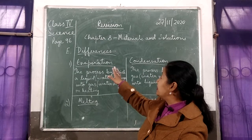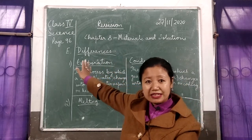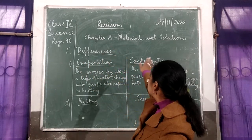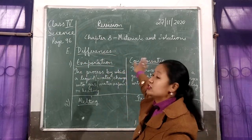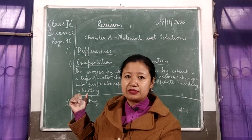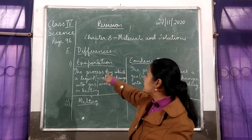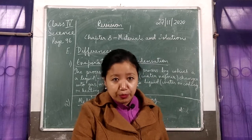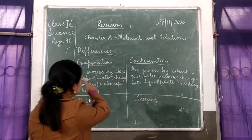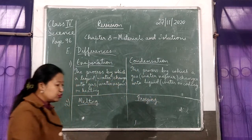So page number 96 — I will read page number 96, chapter 8: Materials and Solutions. I think this is the last chapter that we did. So differences, number 1 — if you look in your book, you have evaporation and condensation.